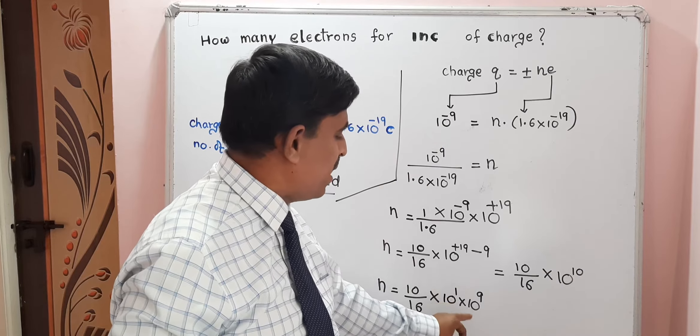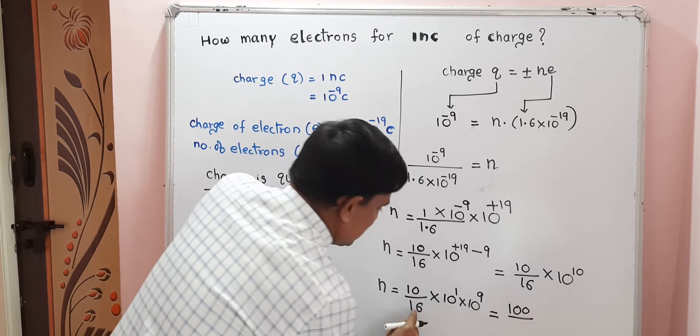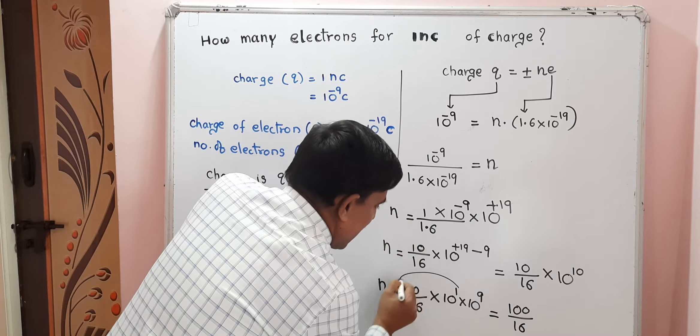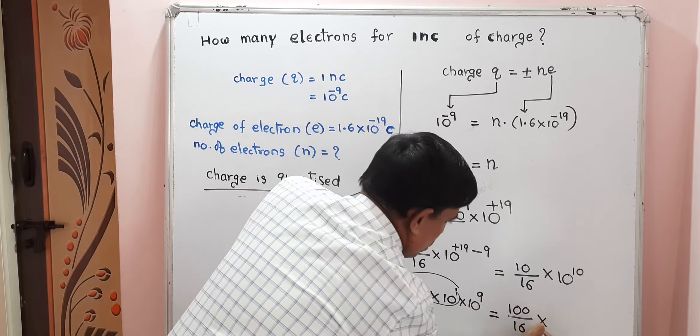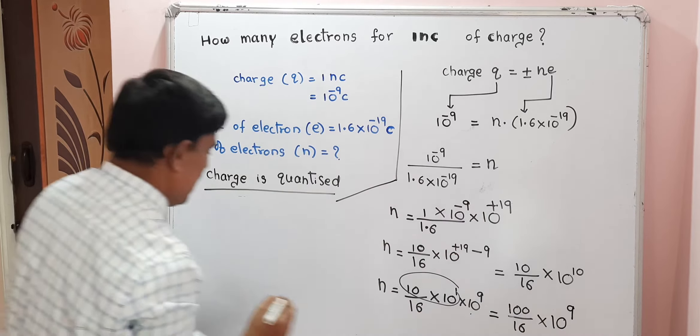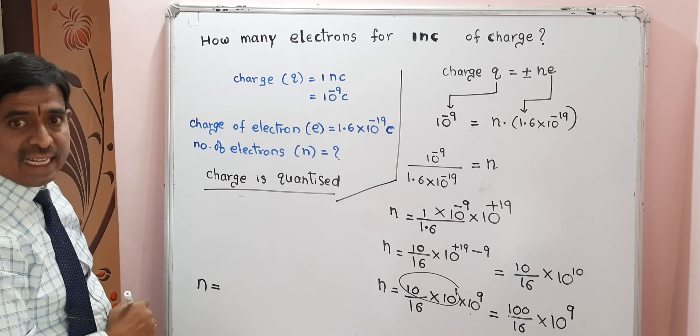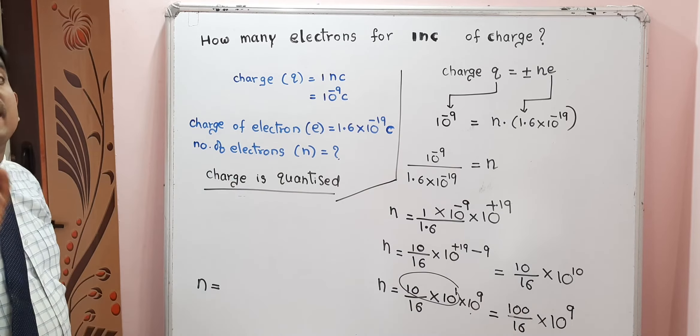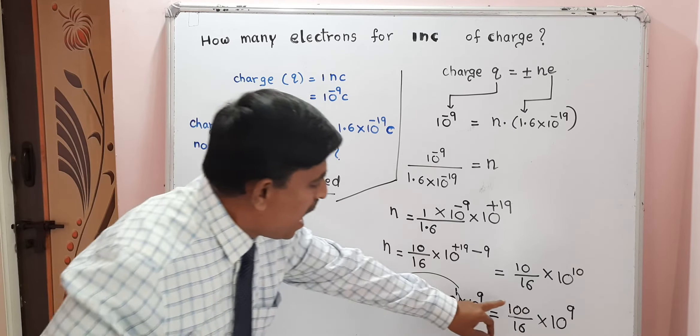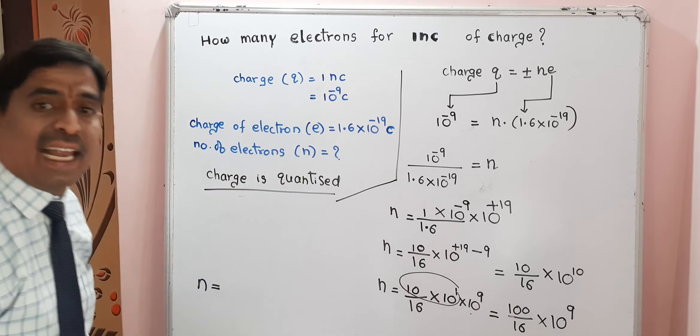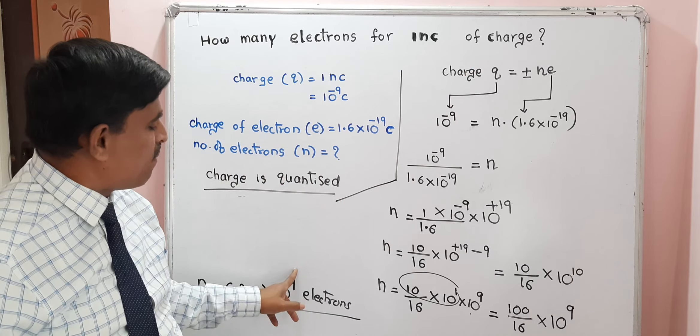100 divided by 16 equals 6.25. Therefore N is equal to 6.25 into 10 power 9 electrons. So, 1 nano coulomb of charge contains 6.25 into 10 power 9 electrons.